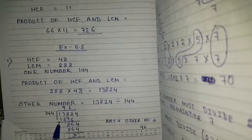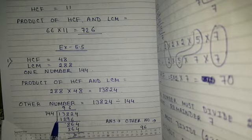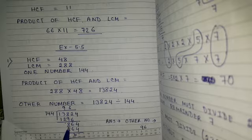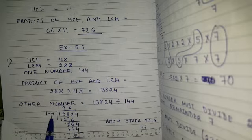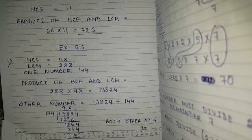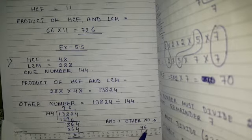Carrying out the division: 144 nines are 1296, subtract to get 86, bring down 4, 144 sixes are 864. So our other number is 96.